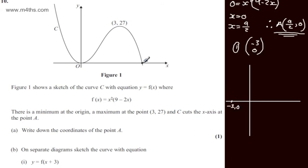I've gone from A, which is 9 over 2, and I've moved to the left by 3. 4 and a half minus 3 is 1 and a half, so I'm going to have the point here, which is going to be 3 over 2 comma 0.